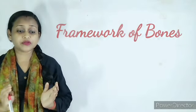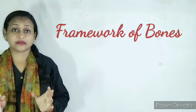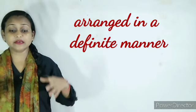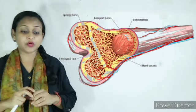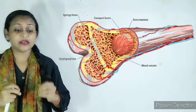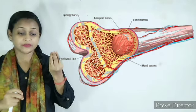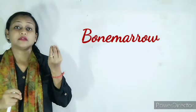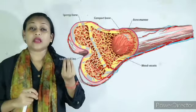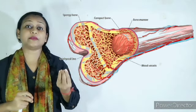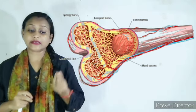The human skeleton is a framework of bones arranged in a definite manner. The bones are hard from the outside, but the inner portion of the bone is filled with a soft bone marrow. This bone marrow is the place where blood cells are produced.